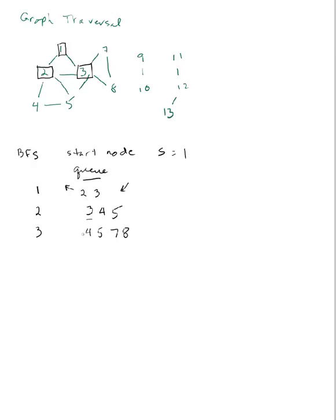That takes care of three. Next will be four. Four has no children to add to the queue, so we'll add five. Five has no children to add to the queue, so we add seven. Seven has no children to add, so we add eight.